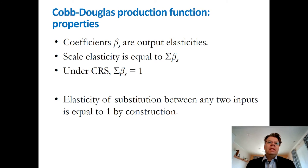We can also immediately calculate the scale elasticity as the sum of this beta_s parameter. If it's sum over all betas, we have the scale elasticity. And further, we know that if the production function exhibits constant returns to scale, or CRS, as we have abbreviated it before, then the sum of these beta parameters is equal to 1.